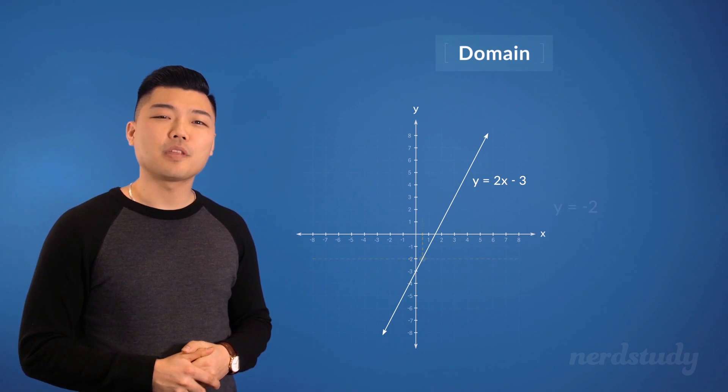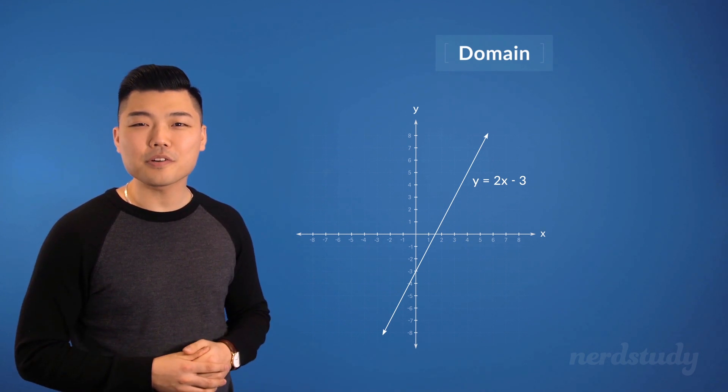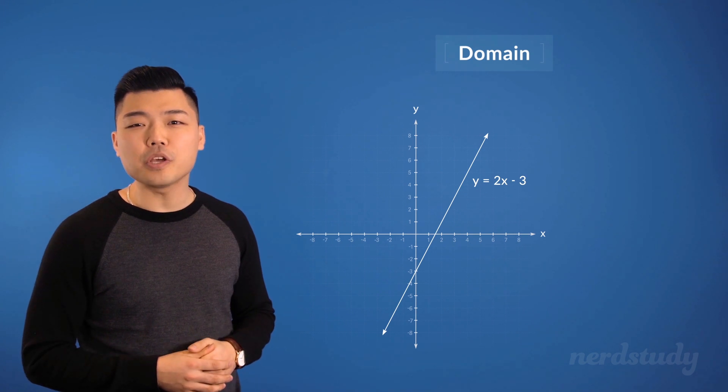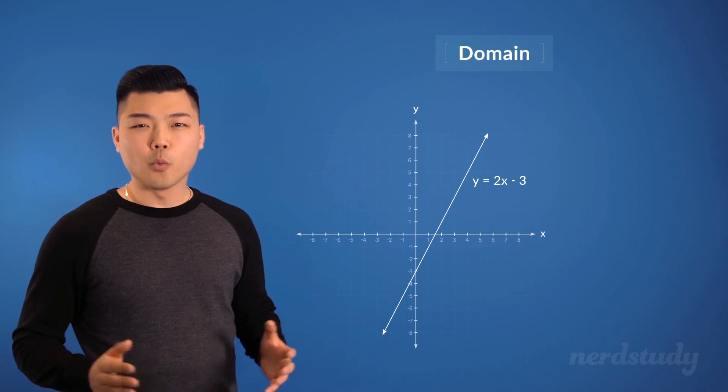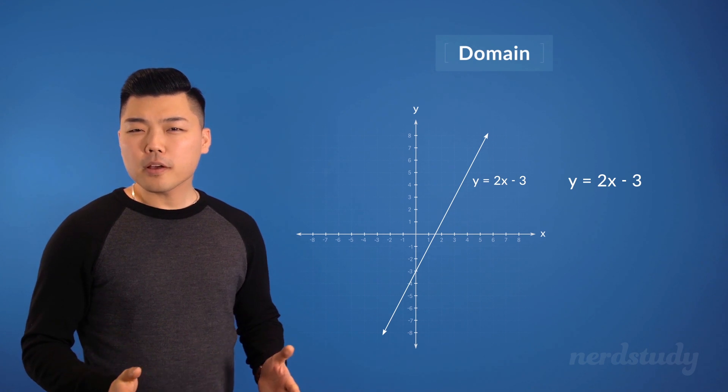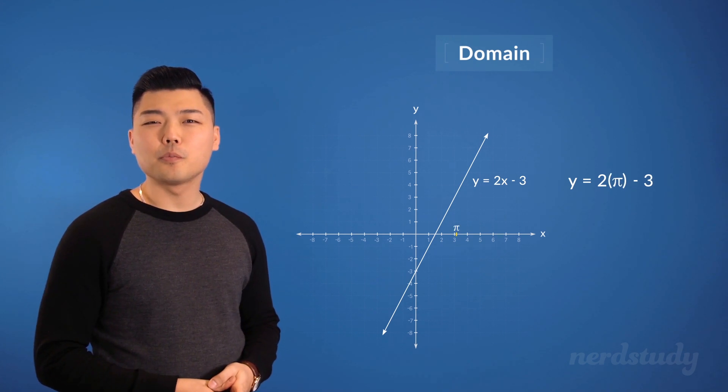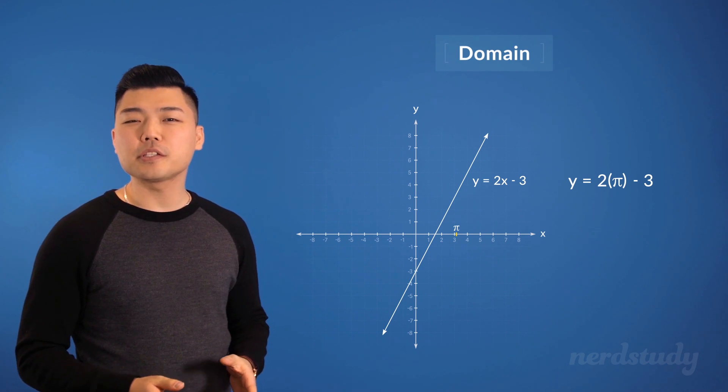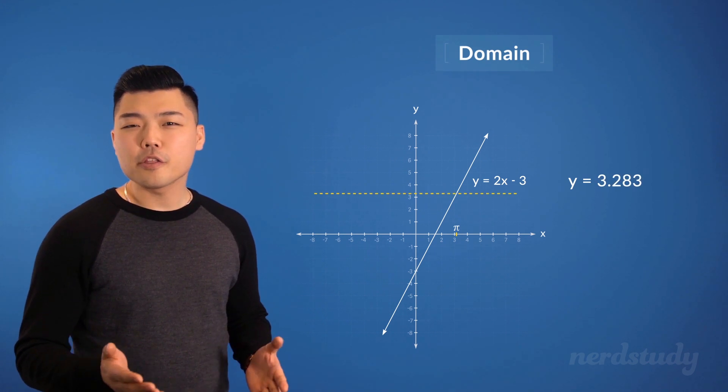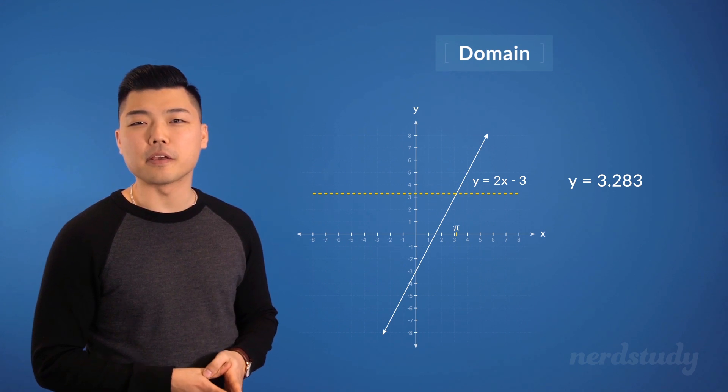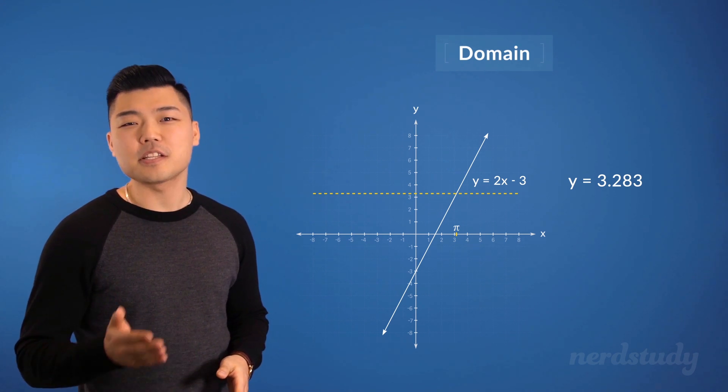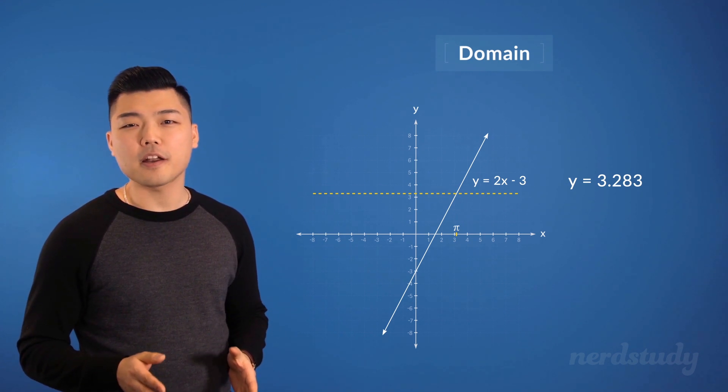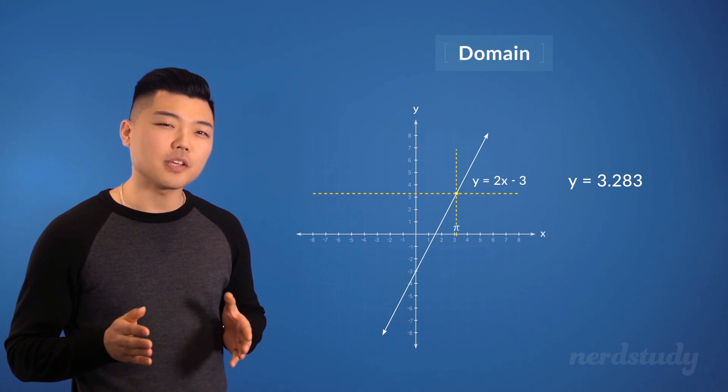So then, is x limited to only rational numbers? Or can we put in an irrational number and get a real number as our output? Well, we certainly can. If we plug in pi for x, we would get 2 times pi minus 3, which will yield an irrational number that is roughly 3.283. Of course, the digits and decimals just go on and on actually, but we can still roughly plot that out onto the graph, right about here.